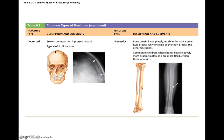A depressed fracture is where a broken bone is pushed inward, typical of a skull fracture — a divot or indentation in the skull. A greenstick fracture is where the bone breaks incompletely. It's called a greenstick because the bone breaks like a stick that's not totally dry yet — it doesn't separate into two pieces; there are still pieces connecting it. This is how bones fracture in children whose bones are relatively more organic and flexible. Only one side of the shaft breaks while the other side bends, which is why it's called a greenstick fracture, and it's more common in children.